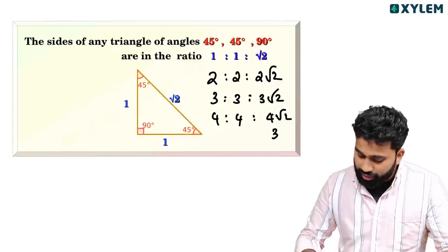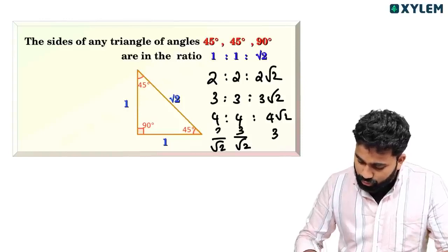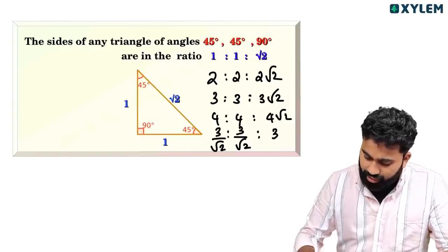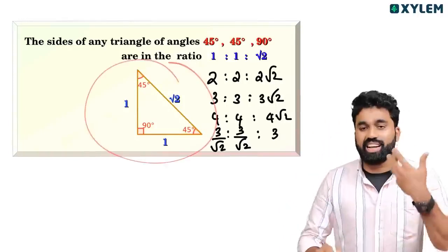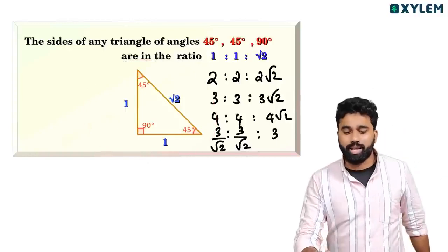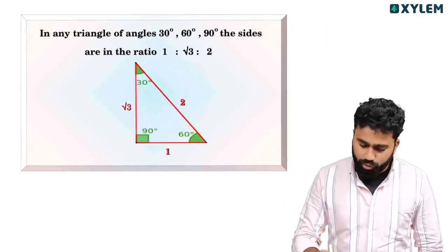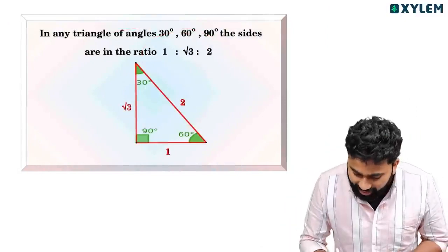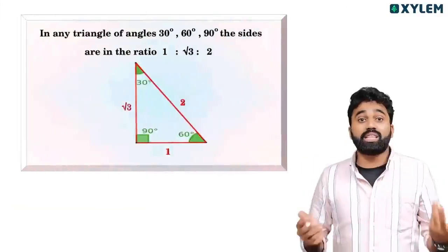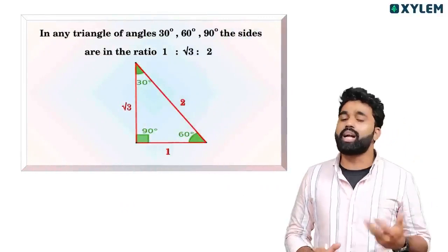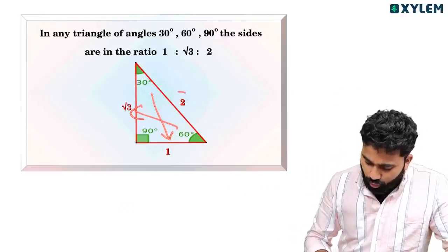If you have root 2, you have a trick — you can multiply by root 2. For example, 3 by root 2. This is a trick you can learn. The root 2 relationship is consistent throughout. Once you find this one thing, the pattern with root 2 becomes clear.